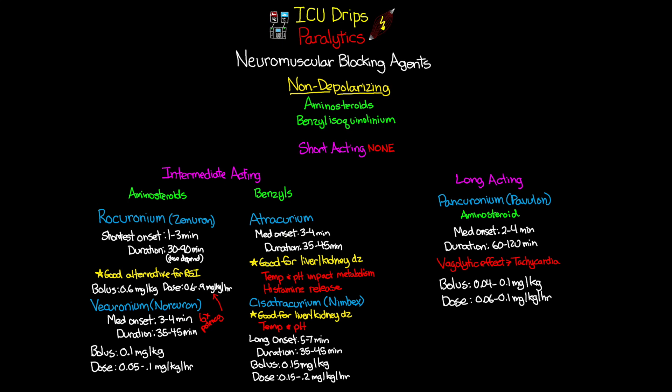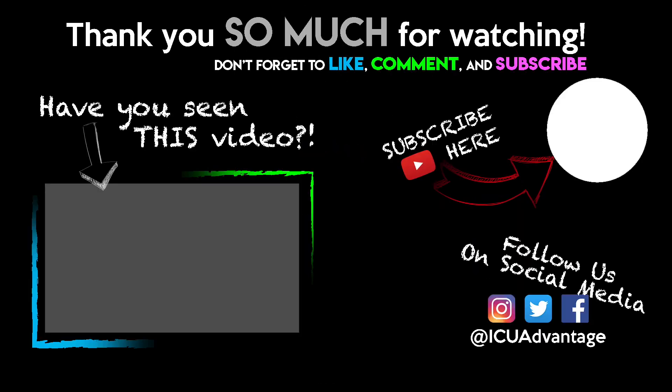That finishes up our discussion on non-depolarizing agents and concludes this lesson on the different medications we use for neuromuscular blockade. Lots of different medications working in different ways, but when it comes to continuous infusions, the common ones you're going to see are cisatracurium or Nimbex, and pancuronium or Pavulon. Thank you so much for watching. If you enjoyed this video, leave us a like or a comment. Look us up on Facebook, Instagram, and Twitter, and if you liked this video, hopefully we earned a subscription from you. Keep an eye out for the next lesson in this series — you guys have a great day.